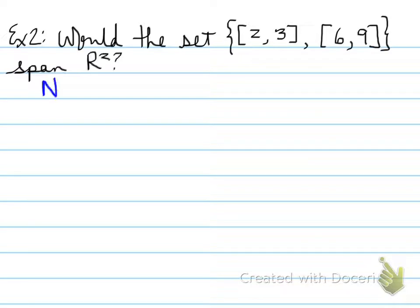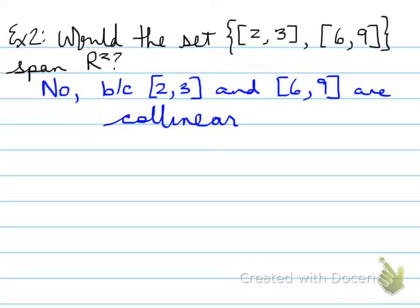Okay, example number two. Would the set [2, 3], [6, 9] span R²? Now, you just saw the answer there, but I want you to think about why. Remember the definition of spanning, that they must be non-collinear and non-zero vectors. Well, we don't have zero vectors there. Zero vector would be [0, 0], but we do have something there that tells us that this would not be able to span it. And the reason why is that [2, 3] can be written as a combination of [6, 9]. So, [2, 3] and [6, 9] are collinear. That means I can take [2, 3] right here and multiply two times three to give us six and three times three to give us nine. So, these two vectors are actually the same vector, just a scalar multiple of each other.